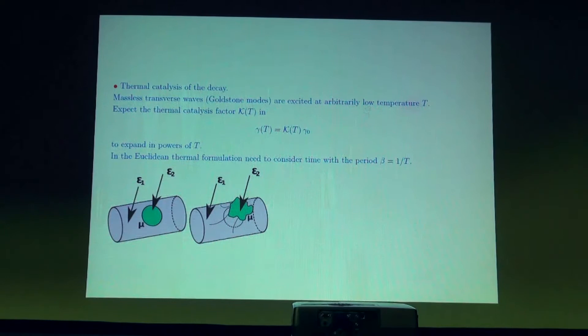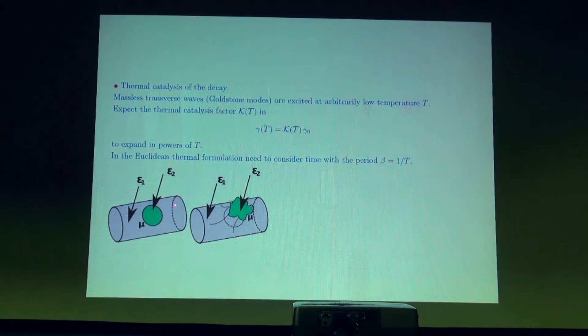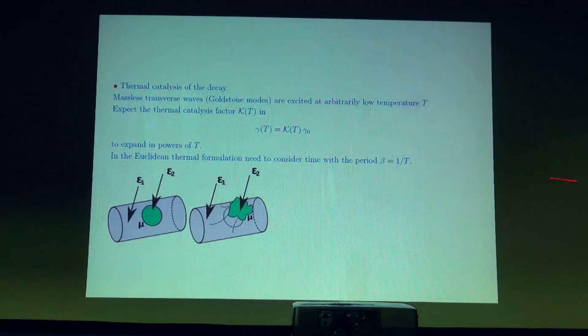The Euclidean formalism allows us to take into account temperature, because finite temperature means that instead of calculating the path integral over infinite Euclidean space, we calculate the same integral on a surface which is periodic in time with period equal to the inverse temperature. There is a big difference between low and high temperature. Low temperature means the period is large, and our circle in the quasi-classical configuration has finite size. The temperature can be considered low as long as the circle fits on the cylinder — as long as its diameter is shorter than the period beta.